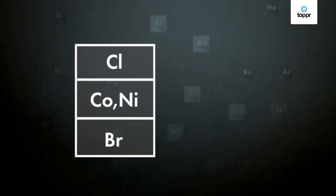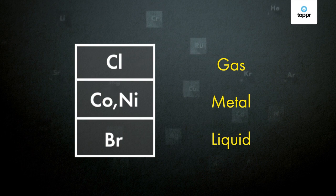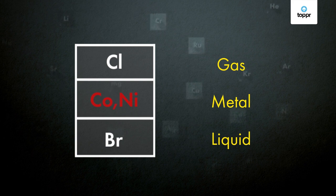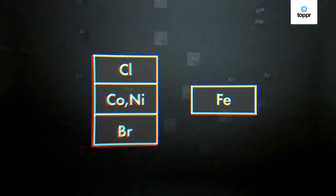Secondly, Newlands wanted all the elements to follow his law. As a result, he tried to adjust elements such as cobalt and nickel, which have different atomic masses, into the same position. These elements not only ended up together but also in the same column as chlorine and bromine. Being non-metals, chlorine and bromine were completely different from cobalt and nickel — so cobalt and nickel were a misfit here. Furthermore, iron, which had similar properties to cobalt and nickel, was placed far from them.